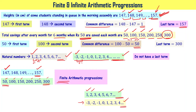In the savings example, there are 6 terms only — that is a finite arithmetic progression. For natural numbers and other such lists, you can write an infinite number of terms. These are infinite arithmetic progressions where the last term is not defined.